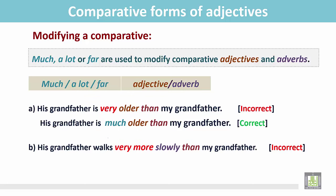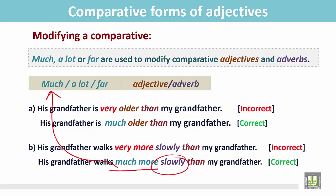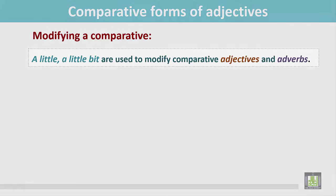Similarly, 'His grandfather walks very more slowly than my grandfather' is wrong. The correct answer is: 'His grandfather walks much more slowly than my grandfather.' We can use much, a lot, or far before the adverb or the adjective in comparative form.